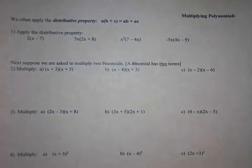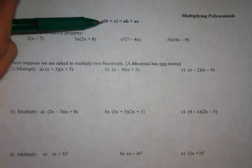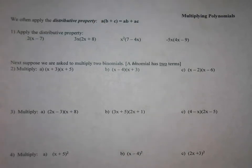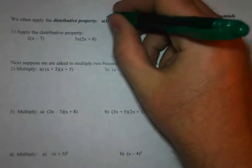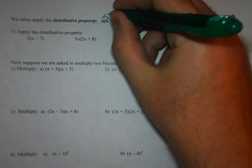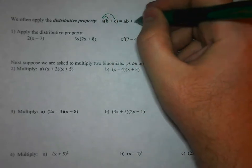When working with polynomials, we will often apply the distributive property. So if you have a times the quantity b plus c, you distribute the a to the b and the c. So that's ab plus ac.